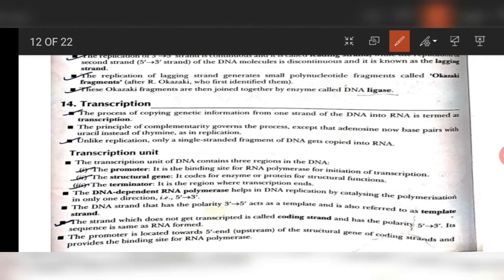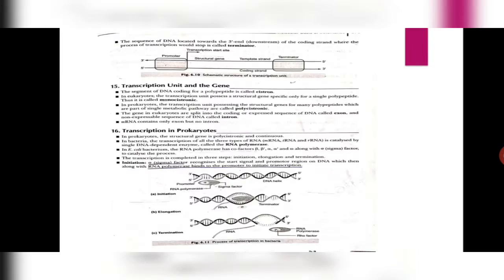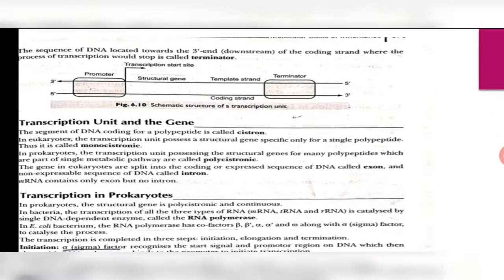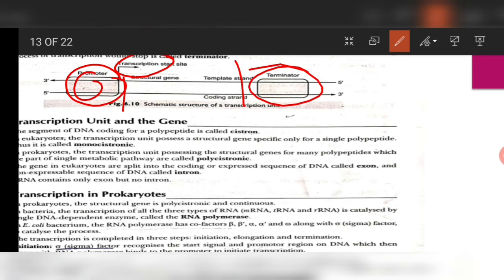Let us now see the structure of the transcription unit. As you can see very carefully, there is a promoter region and a transcription start site where RNA polymerase binds. It then codes the structural gene, converts it to mRNA, and terminates at the terminator.